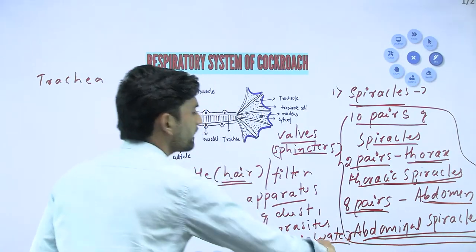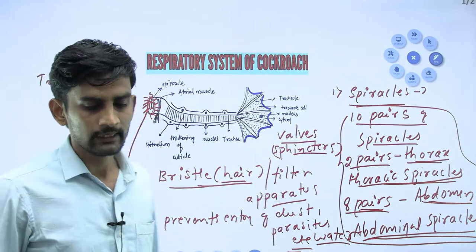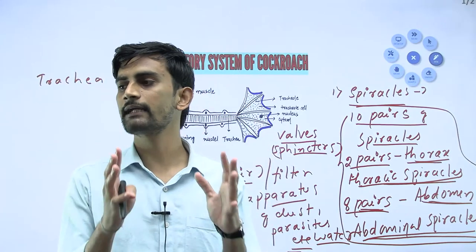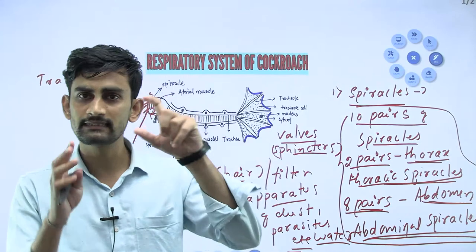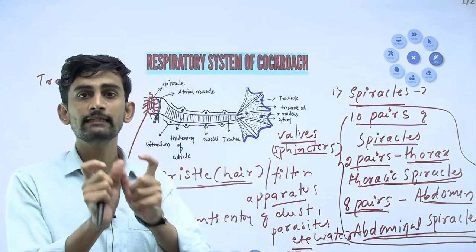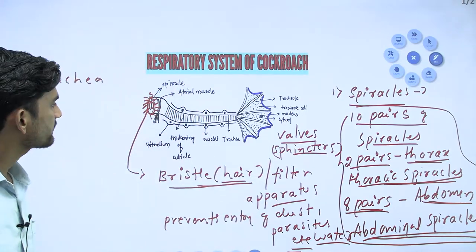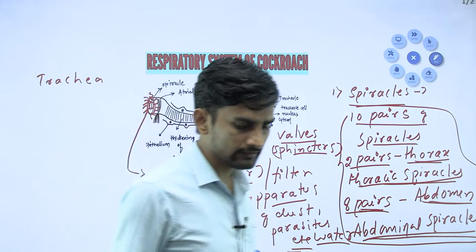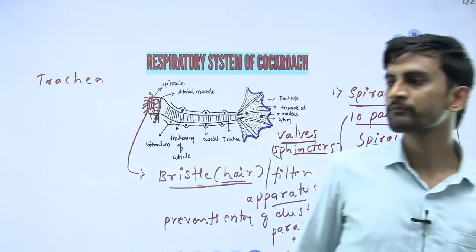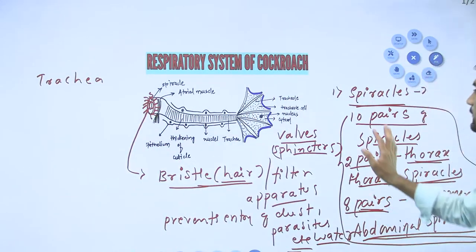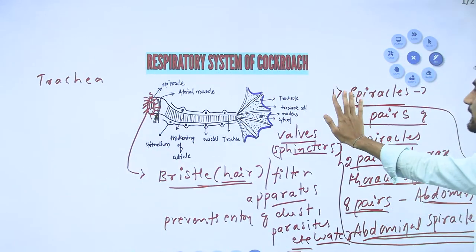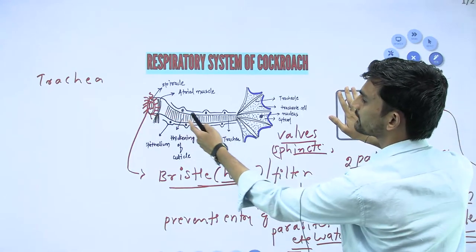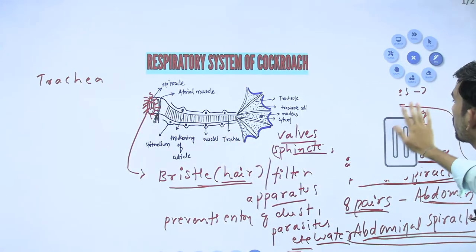Water entry will also be completely prevented by these bristly or hairy structures present around the spiracles. In total, 10 pairs of spiracles you will find. After the spiracle, the second part is called the trachea - following the spiracle opening, next is the trachea.